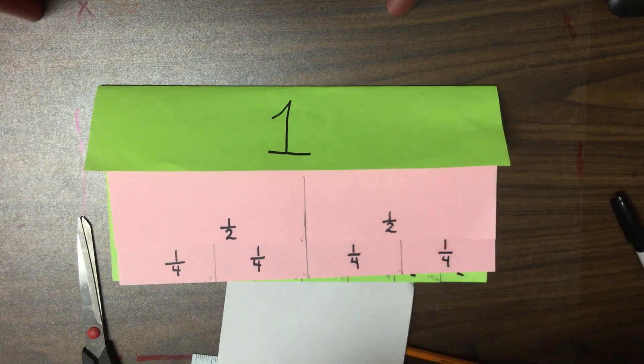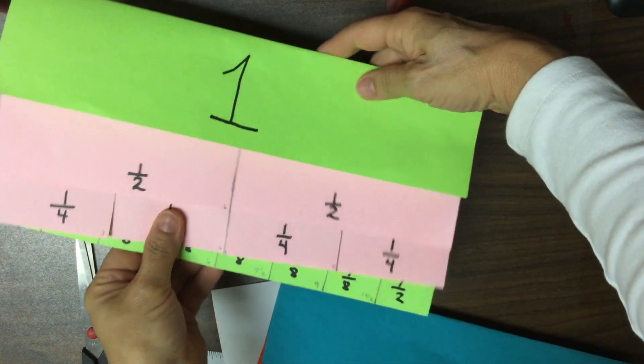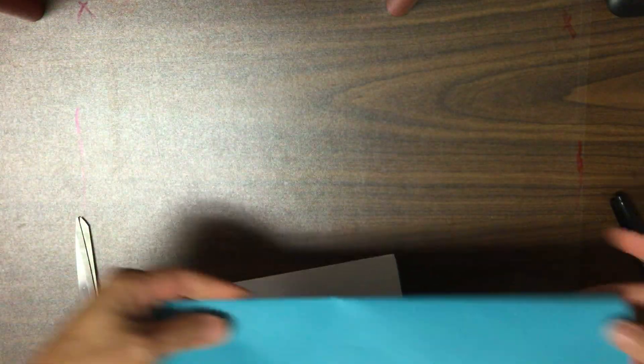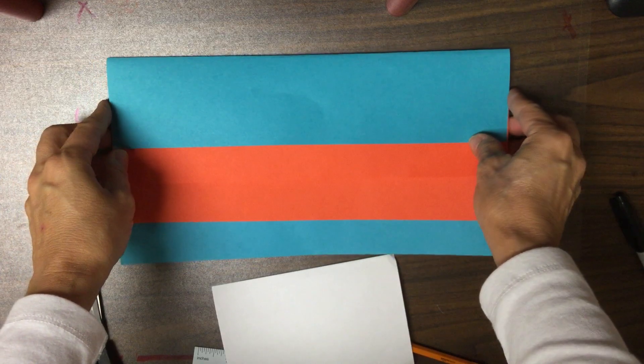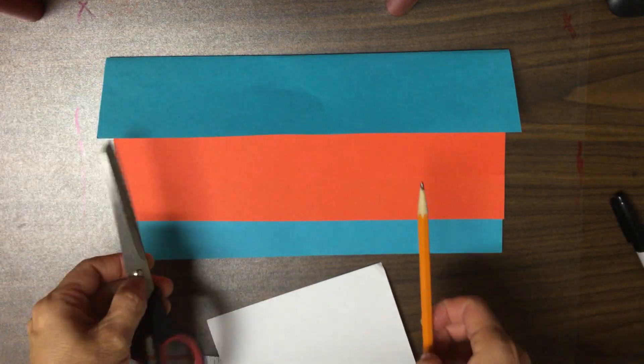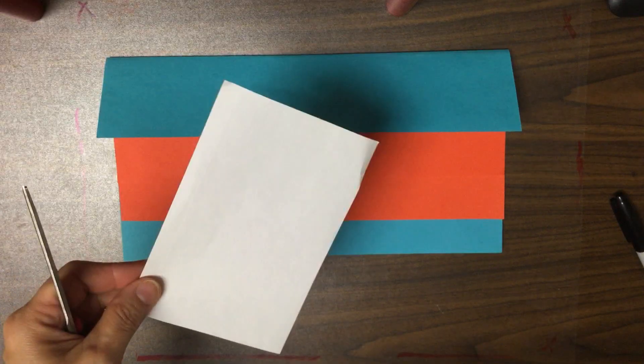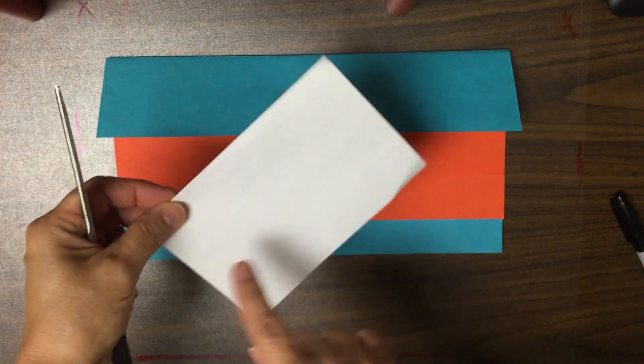Okay, now that we have finished our half fraction flip book, we are going to make our second fraction flip book. So, we're going to need the other two sets of construction paper. Again, scissors, pencil, a ruler, and a right corner paper.